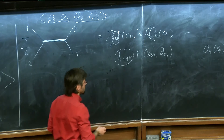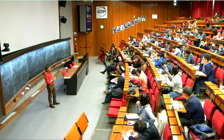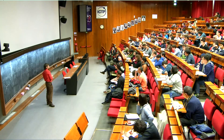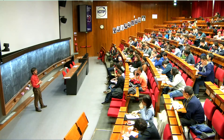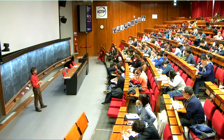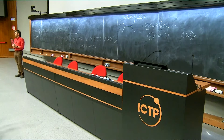These O_K are primary operators. If you happen to have two operators of the same dimension, you should do a linear transformation to diagonalize. Generically in an interacting CFT, all dimensions are different. It's only in very special theories — like free theories — that you have operators which are not identical but have the same operator dimension, in which case you need to do a diagonalization.